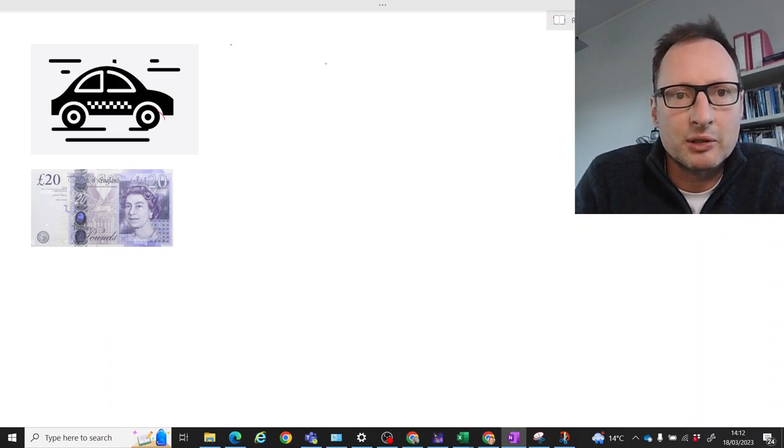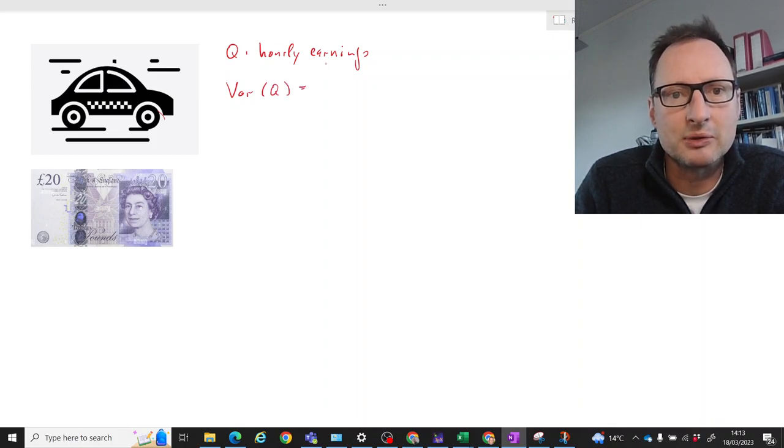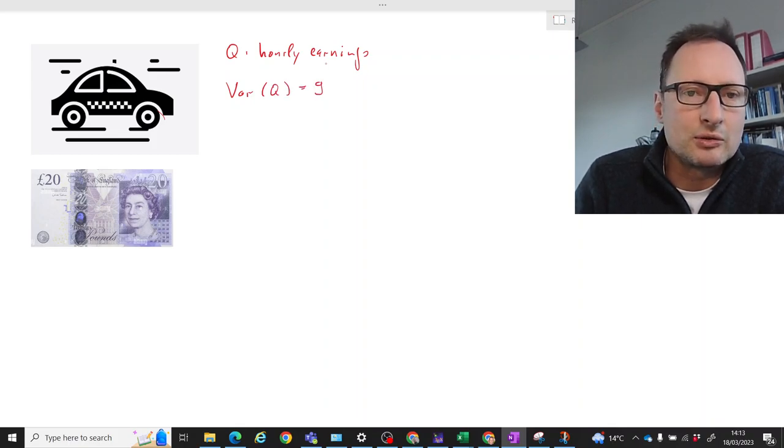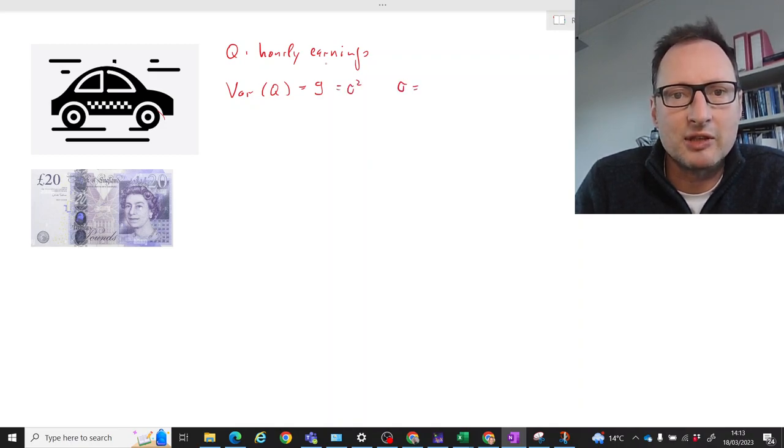So let's call a random variable Q which is the hourly earnings of your taxi drivers and let's say from long years of running this business you know that the variance of Q is equal to 9. So sigma squared, that means the standard deviation is 3.